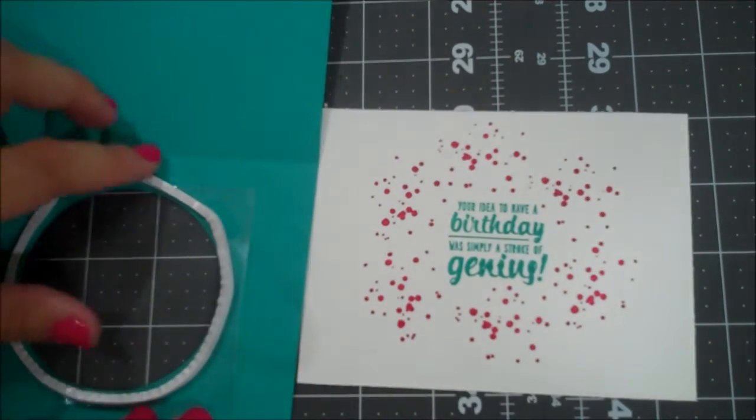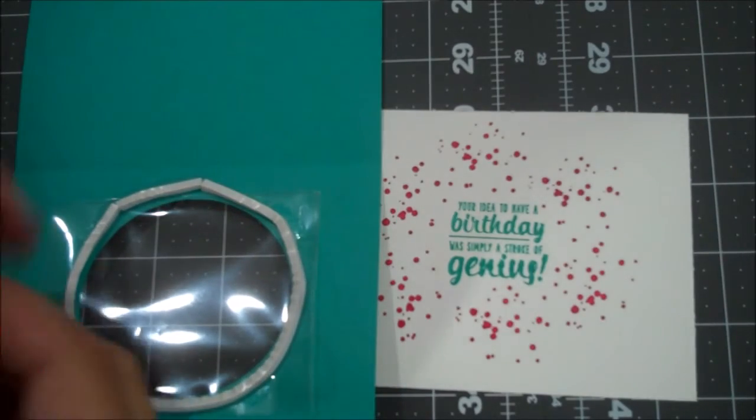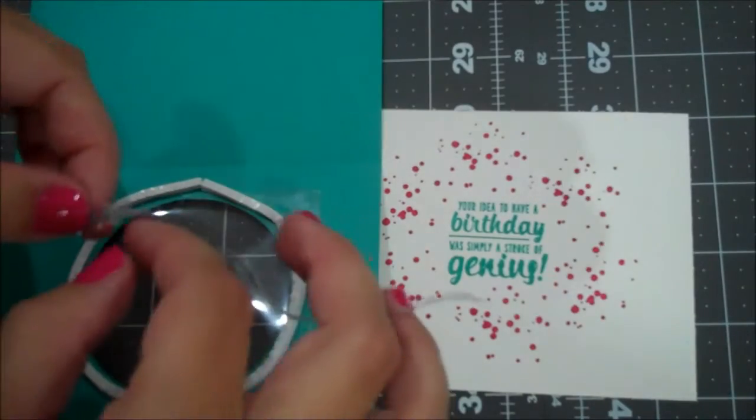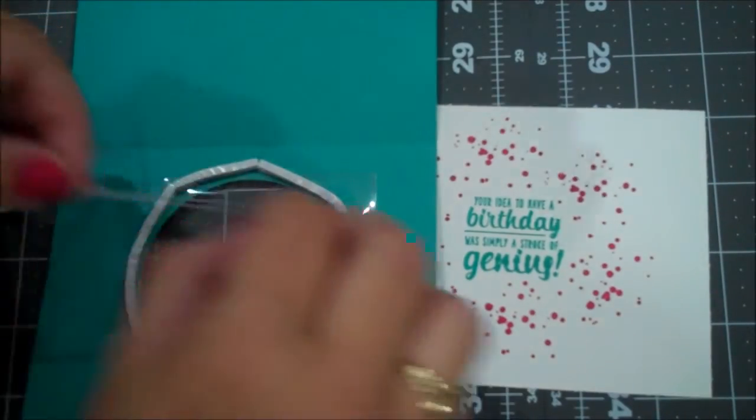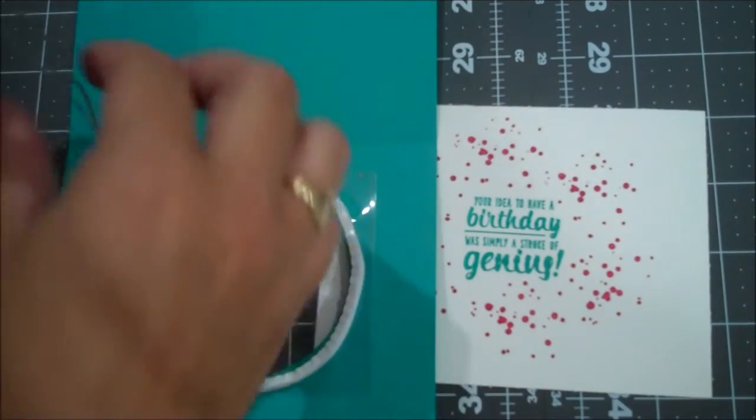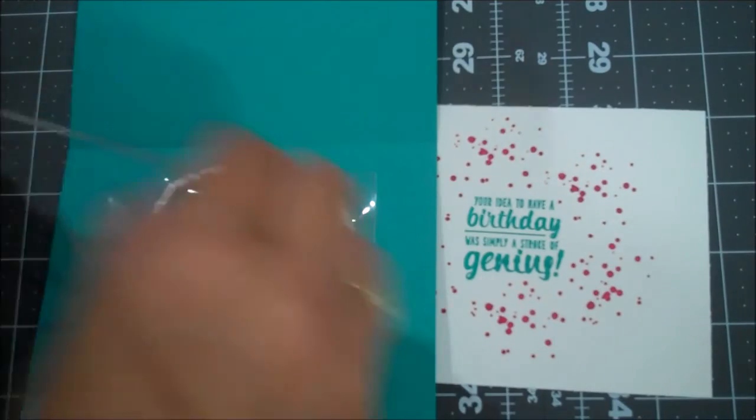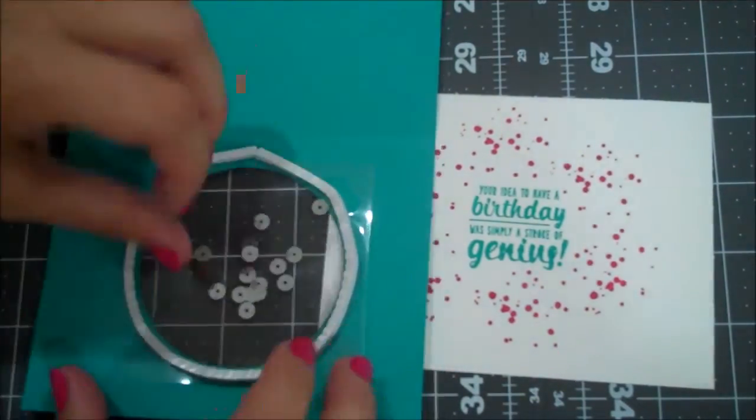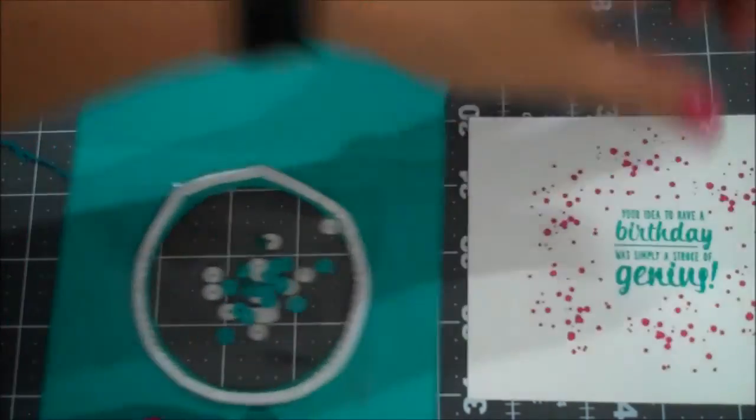So for my contents of the circle, I am actually just going to use some of our sequin trim. So I have some silver and I have Bermuda Bay here. And I am just going to pull these off from both colors. So I will probably fast forward this part of the video. Okay. So there we have our sequins.